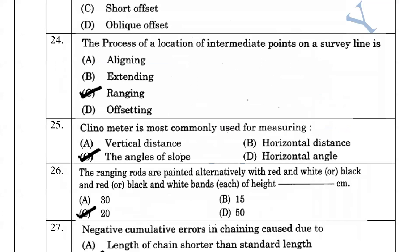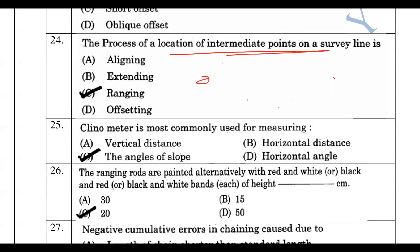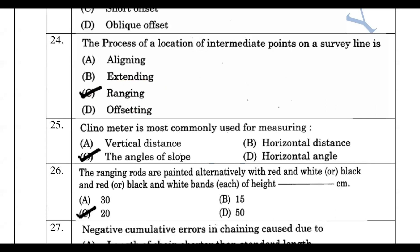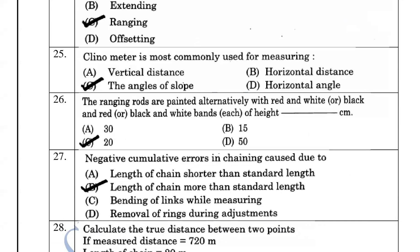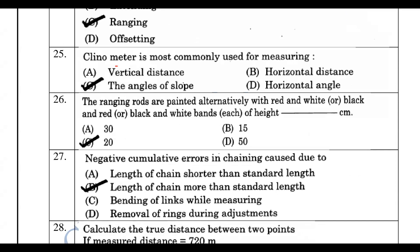The process of locating intermediate points is called ranging, done using a ranging rod. The clinometer is mostly used for measuring the angle of slope.